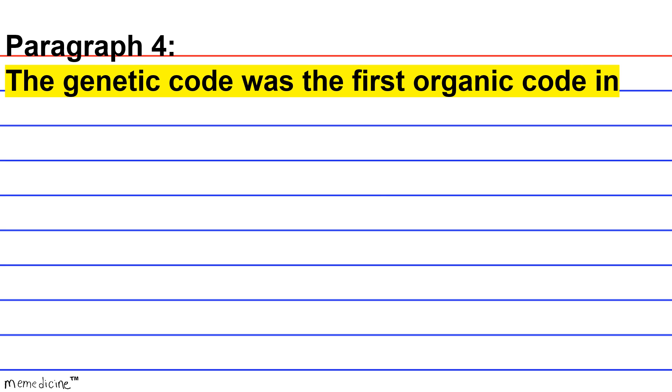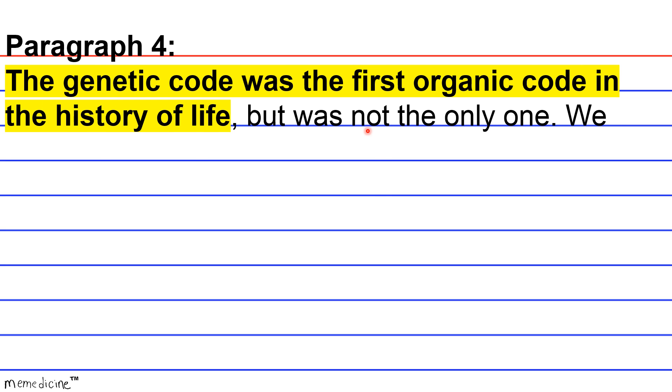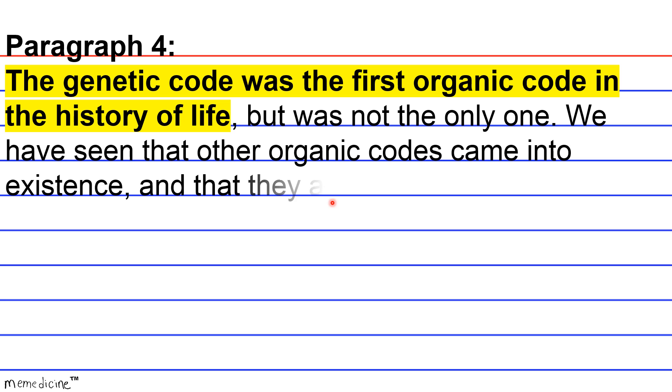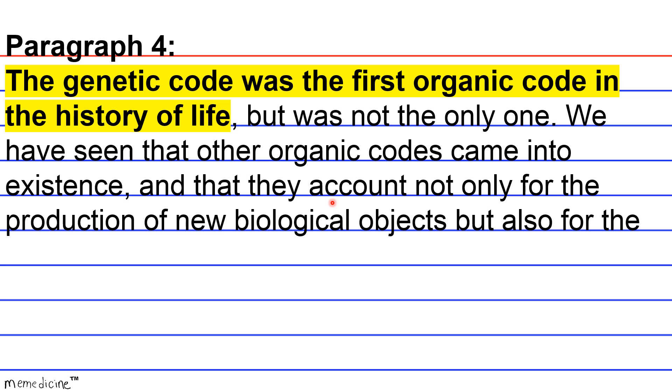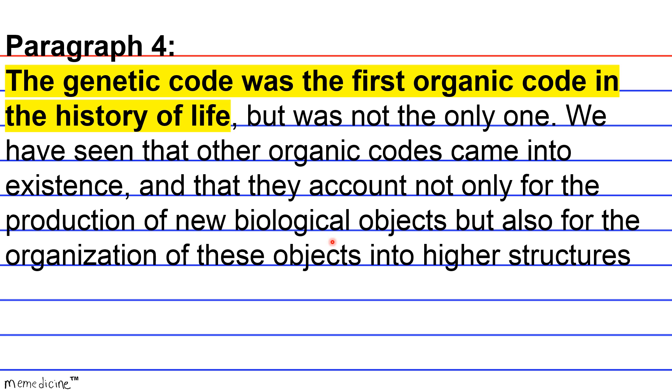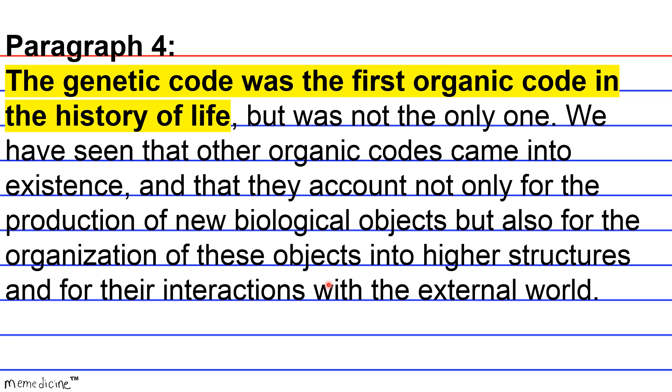Paragraph 4. The genetic code was the first organic code in the history of life, but was not the only one. We have seen that other organic codes came into existence, and that they account not only for the production of new biological objects, but also for the organization of these objects into higher structures and their interactions with the external world.